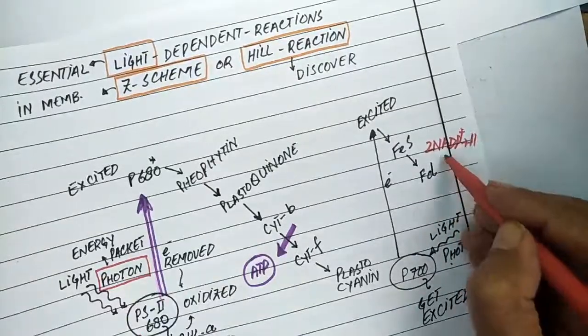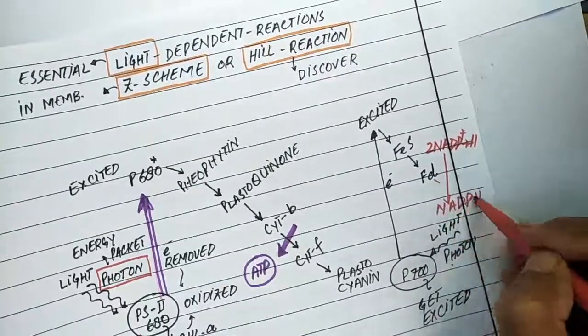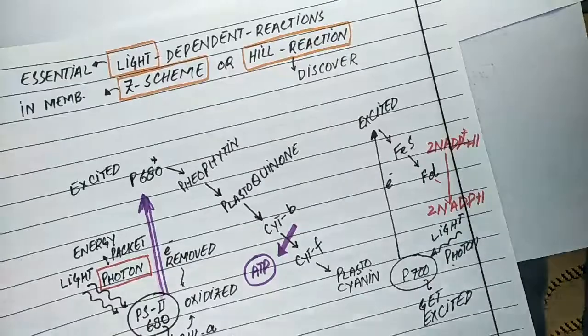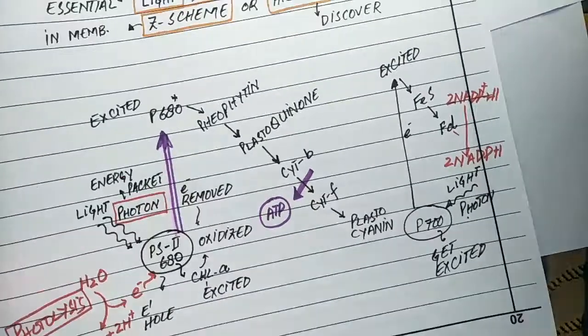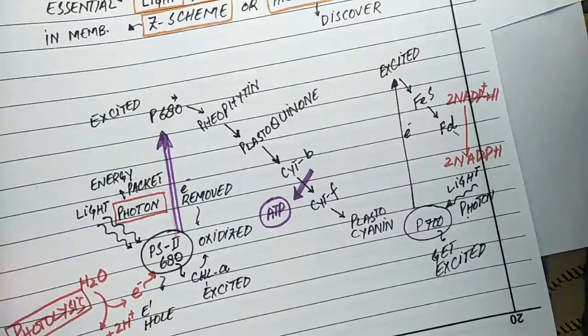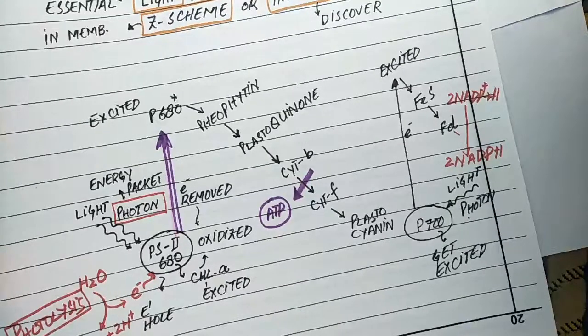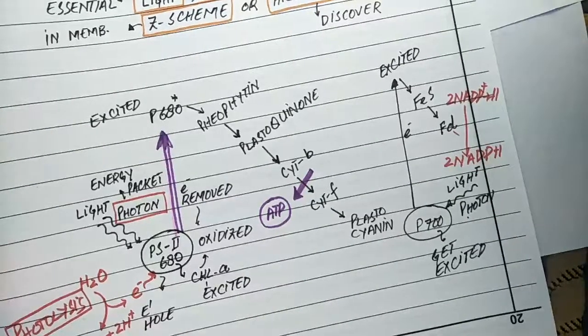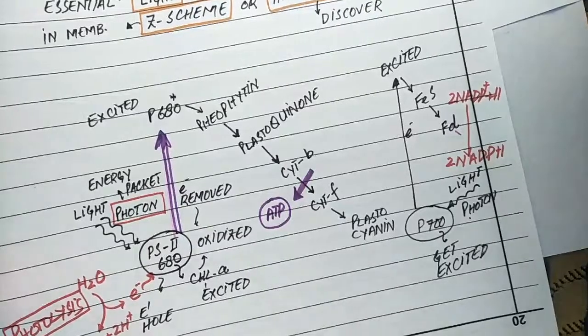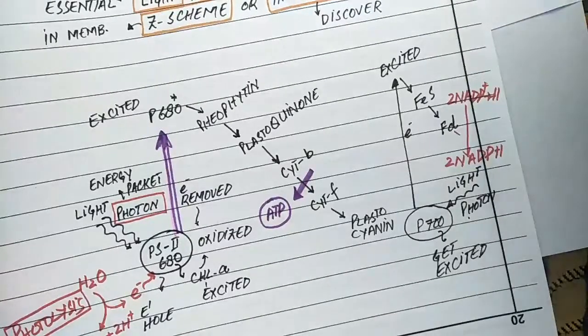The final acceptor is NADP, which gets reduced by absorbing electrons from ferredoxin. The electron hole of P700 gets filled by electrons from plastocyanin.